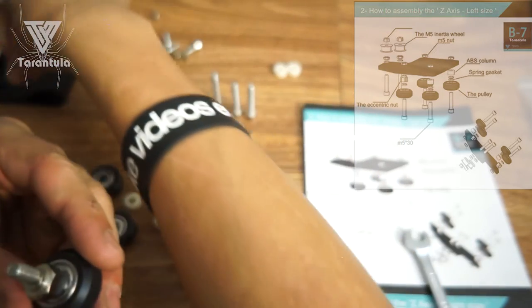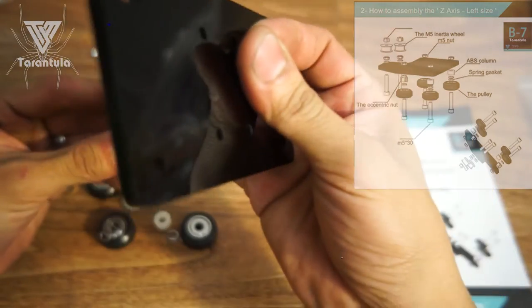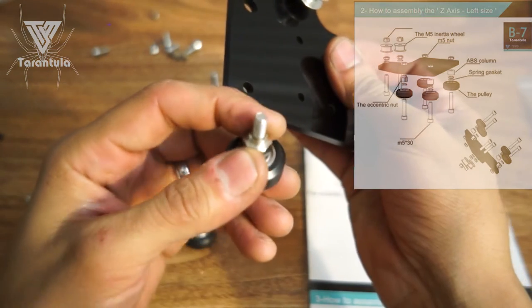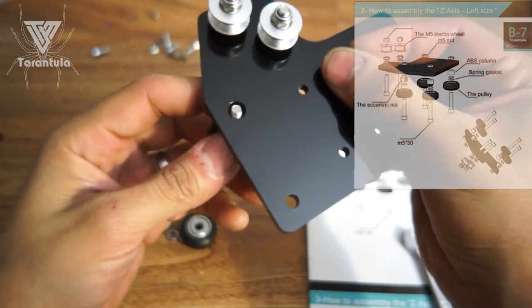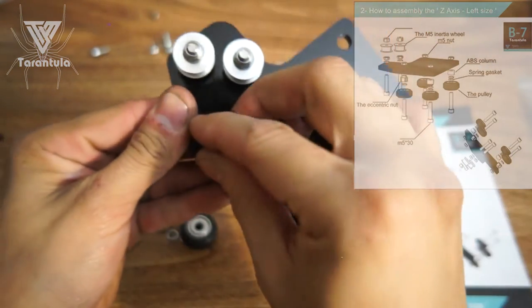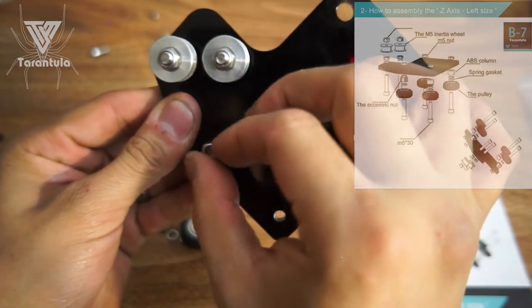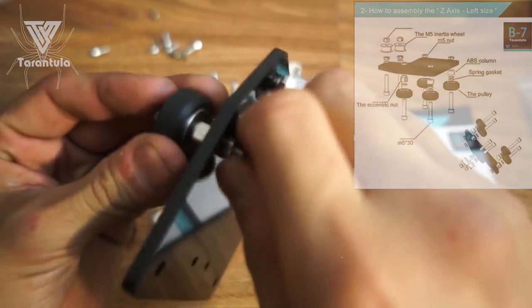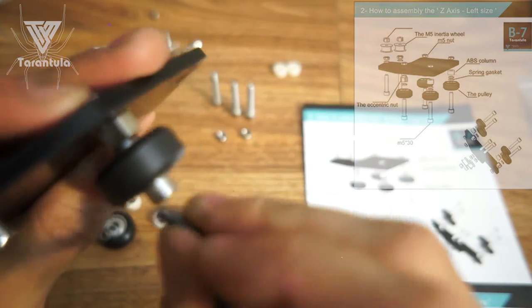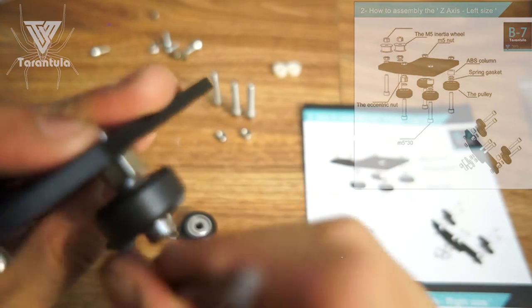And then the nut here. So put up that little round spot in the eccentric nut there into the hole.